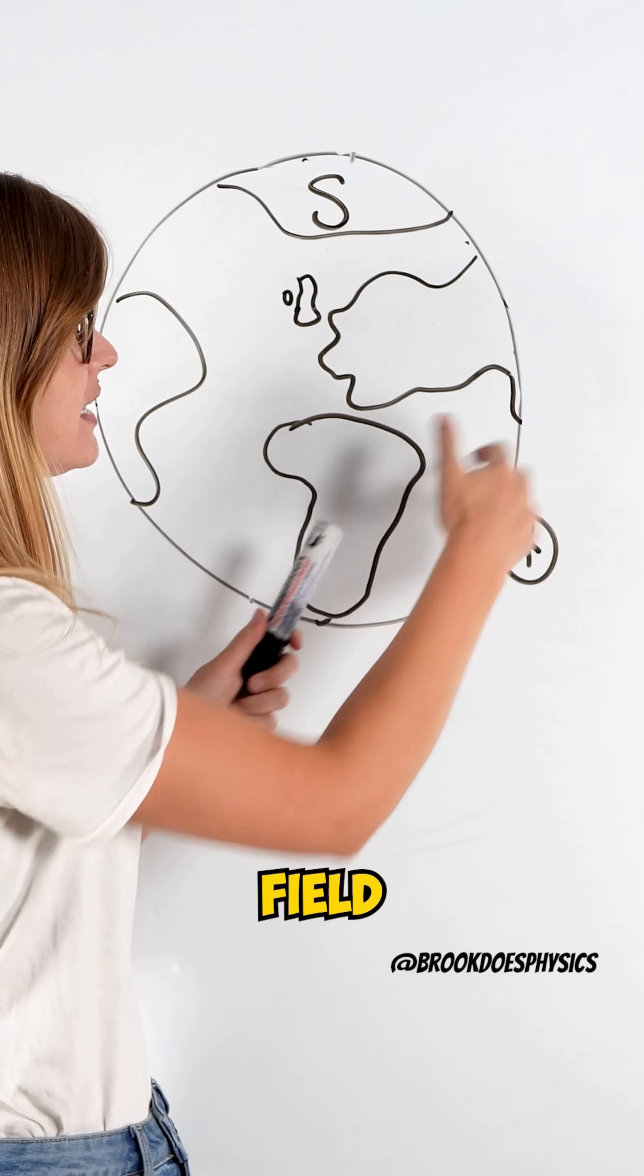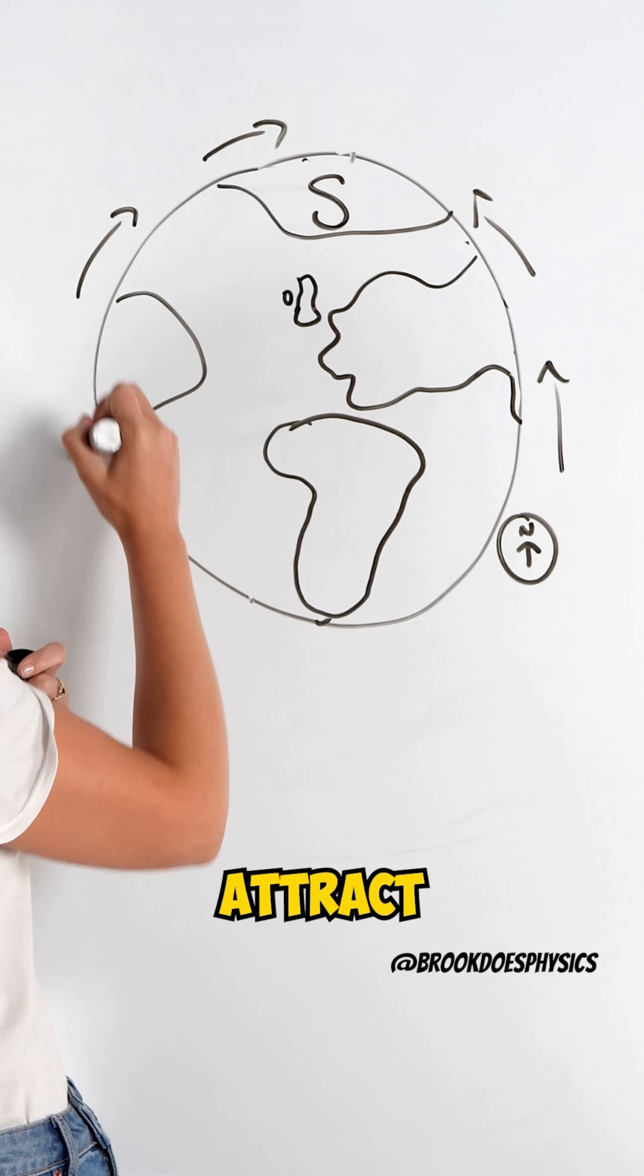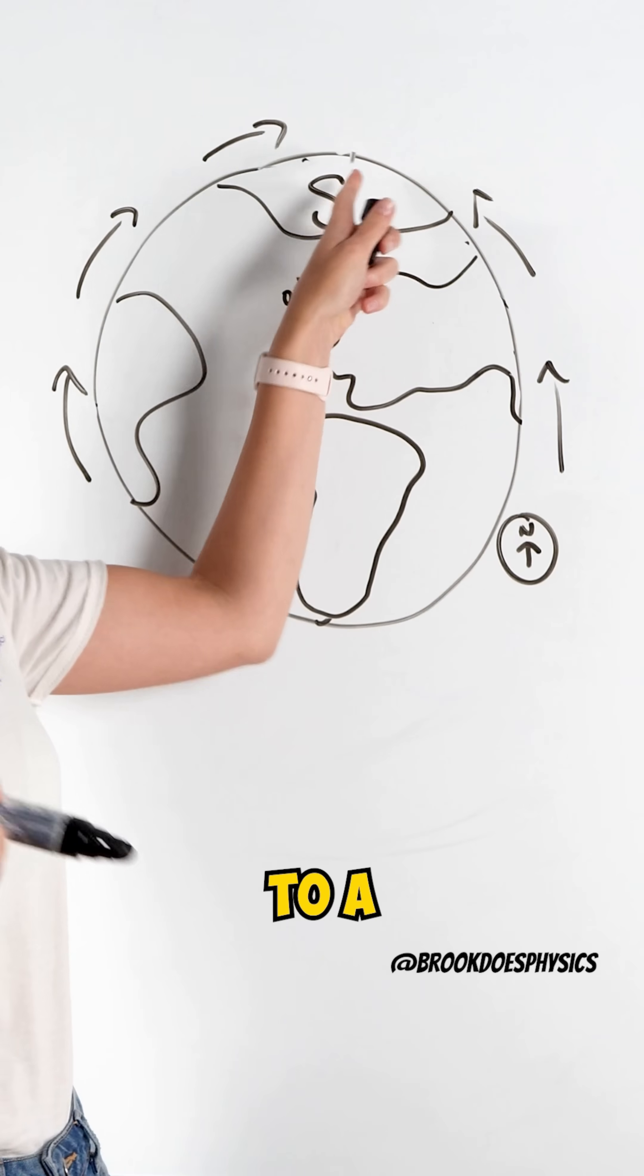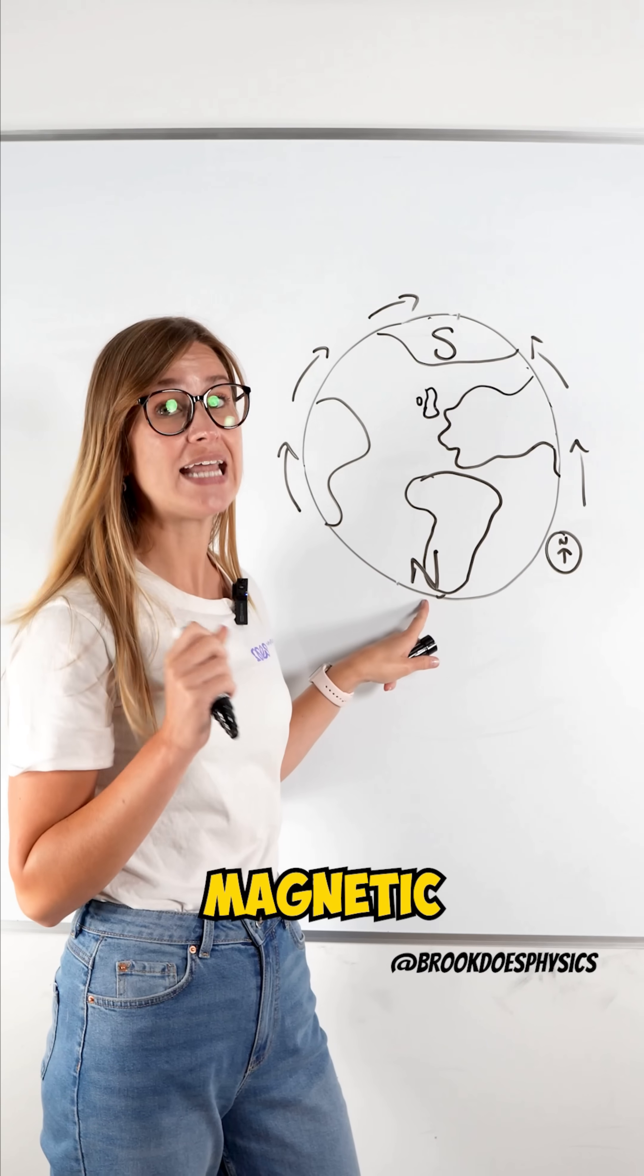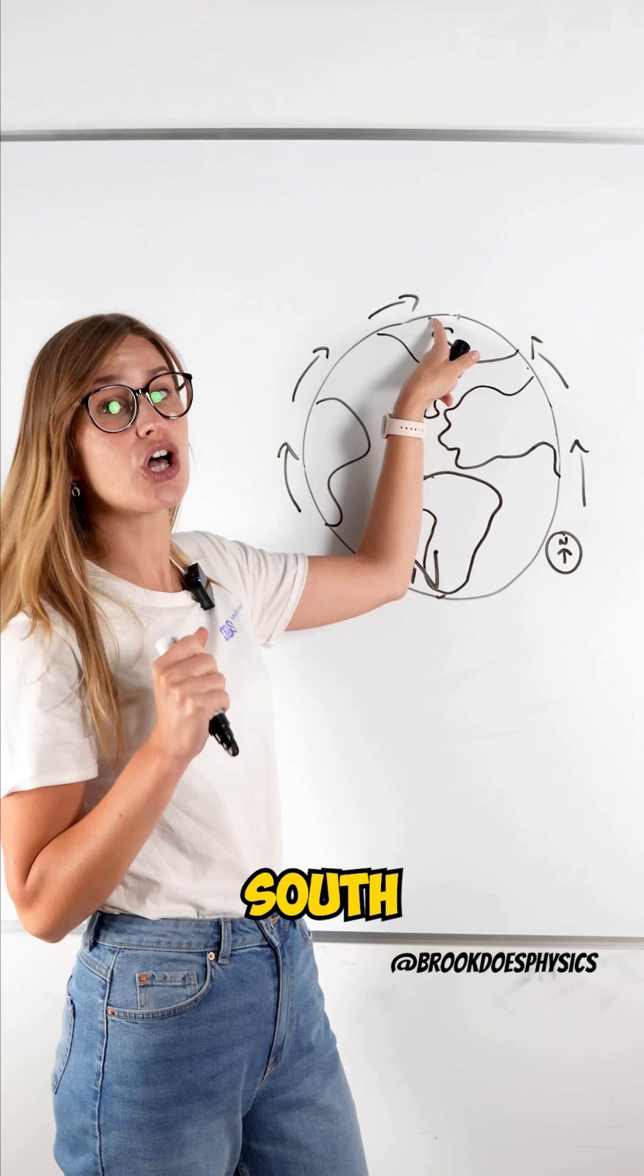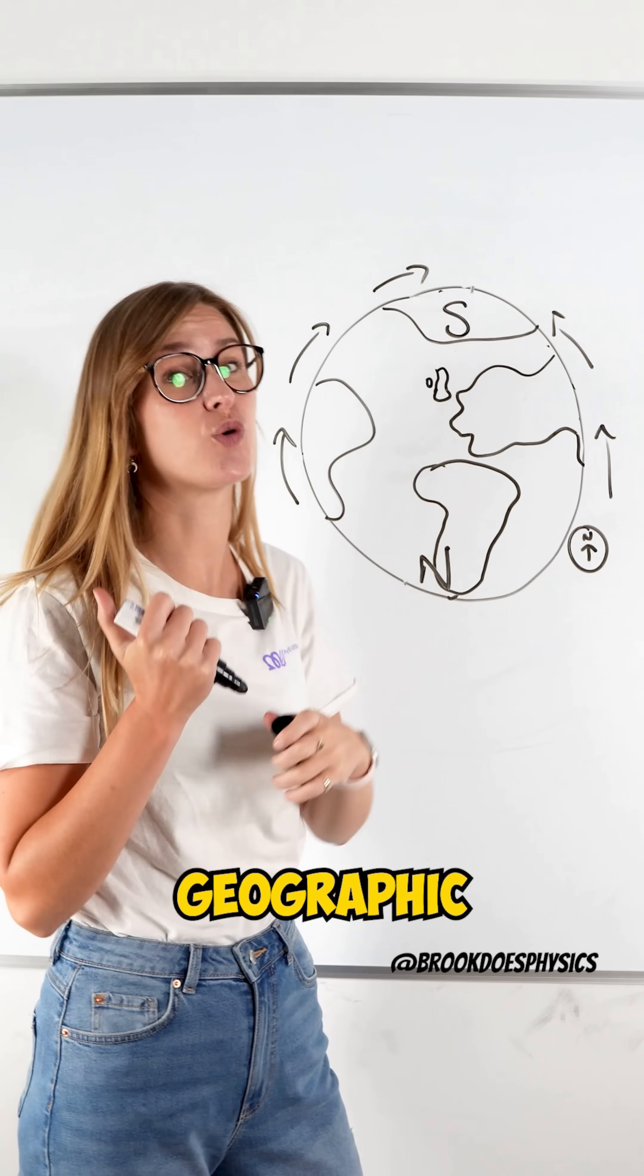Because all of the field lines point in this direction. Again, opposites attract. The north pole of the magnet is attracted to a south pole. So down here is our north magnetic pole. Up here is your south magnetic pole. But we call it the north geographic pole.